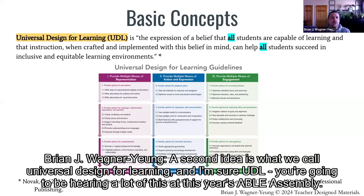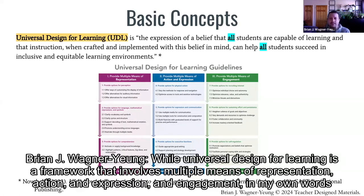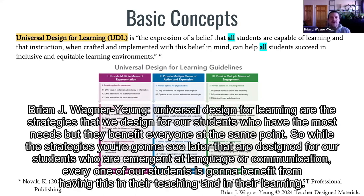A second idea is Universal Design for Learning — UDL — which you'll be hearing a lot about at this year's ABLE Assembly. UDL is a framework involving multiple means of representation, action, expression, and engagement. In my own words, UDL is about strategies designed for our students who have the most needs, but that benefit everyone at the same time. Every one of our students will benefit from having these strategies in their teaching and learning.